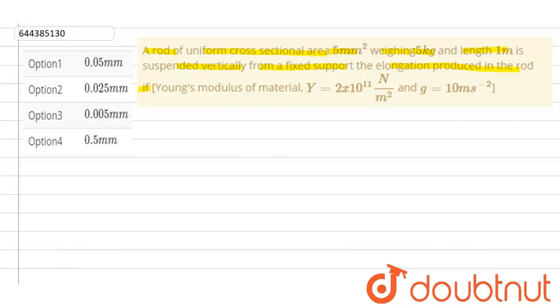So in this question it is written that there is a rod hanging vertically and its weight acts vertically downwards, that is mg. Now due to this weight it gets elongated, its length increases by a certain amount.